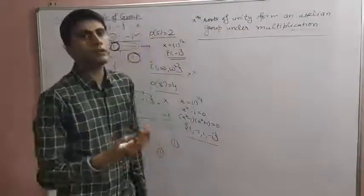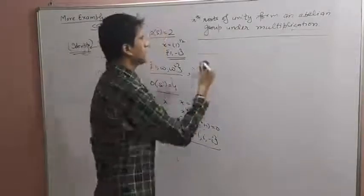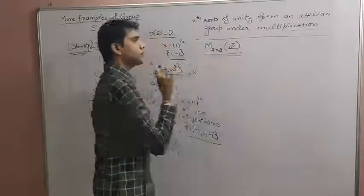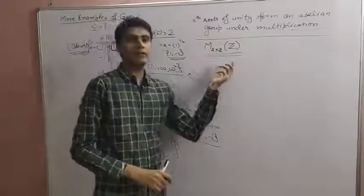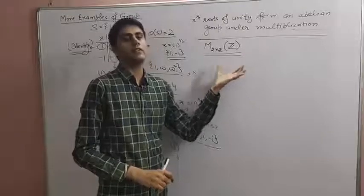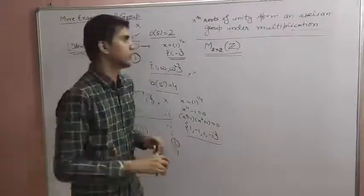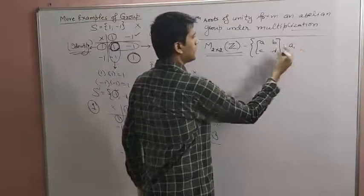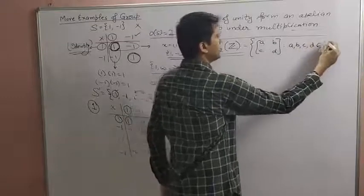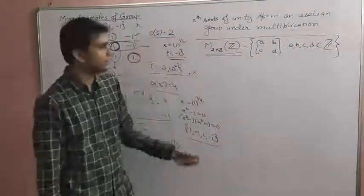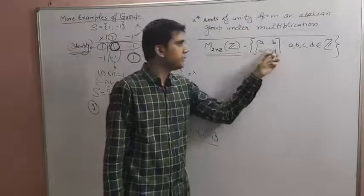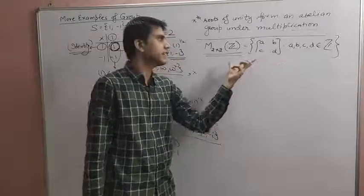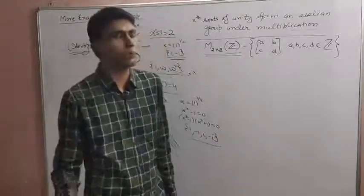Next example: the set M_{2×2}(Z) of all 2×2 matrices with integer entries. This is an infinite set since there are infinitely many possibilities for the integer entries. We first check whether this set forms a group under addition of matrices. For closure: adding any two 2×2 integer matrices gives another 2×2 matrix with integer entries, so the result stays in the set.